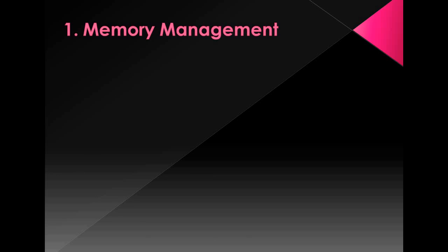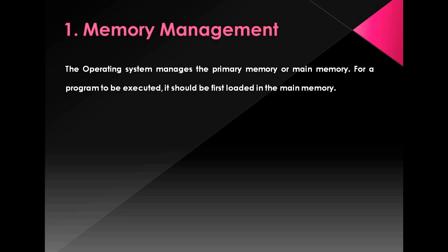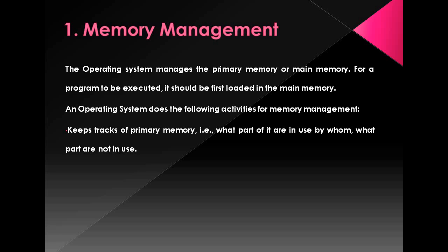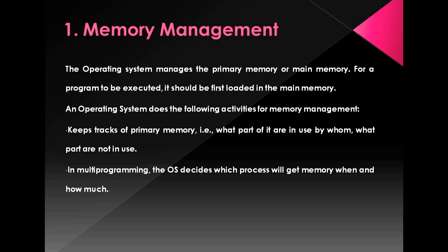The first function of the operating system is memory management. The operating system manages the primary memory or main memory. For a program to be executed, it should first be loaded in the main memory. The operating system does the following activities for memory management: keeps track of primary memory — what parts of it are in use by which process, and will get memory when and how much. It also allocates the memory when a process requests it.